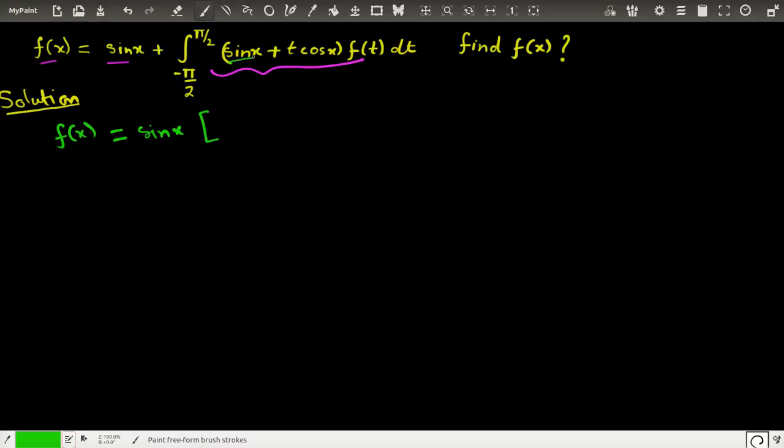And here, by the way, this sin(x) can also be taken outside the integration, so the function becomes 1 plus this is minus π/2 to plus π/2, this is f(t), f(t) dt, plus the second half which is the cos(x) function. Now this becomes integration minus π/2 to plus π/2, this is t times f(t) dt.